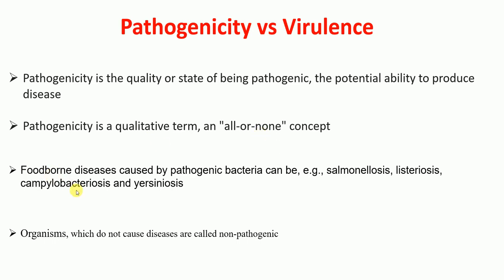Organisms which produce disease are called pathogenic organisms, while organisms which do not cause disease are called non-pathogenic organisms. Pathogenicity is therefore a qualitative term. For example, foodborne diseases are caused by pathogenic bacteria, such as salmonellosis caused by Salmonella, listeriosis caused by Listeria, campylobacteriosis,